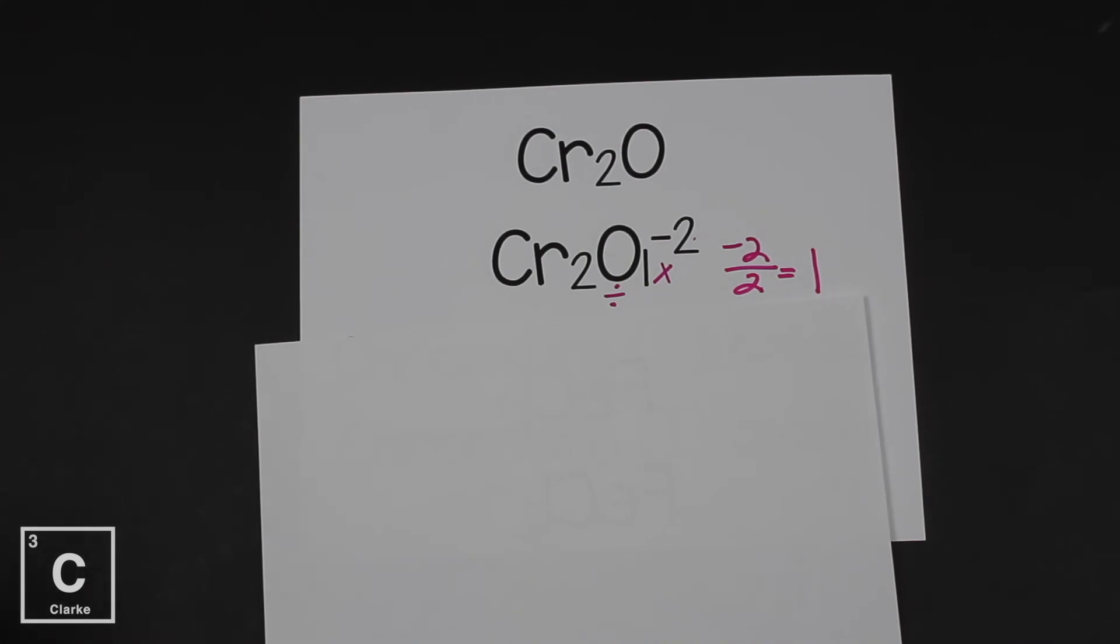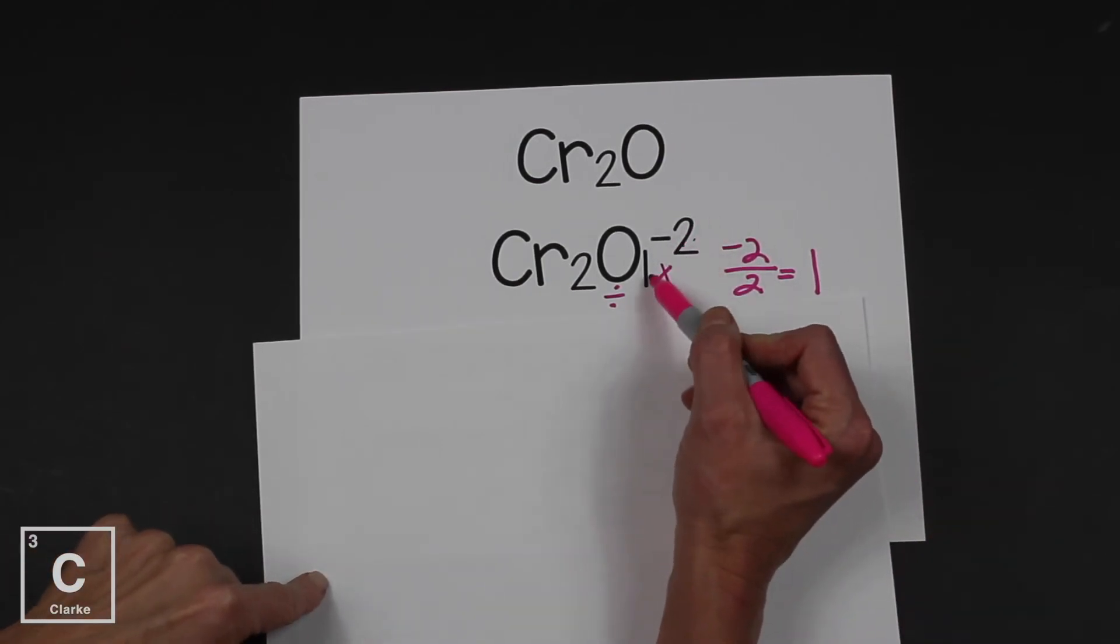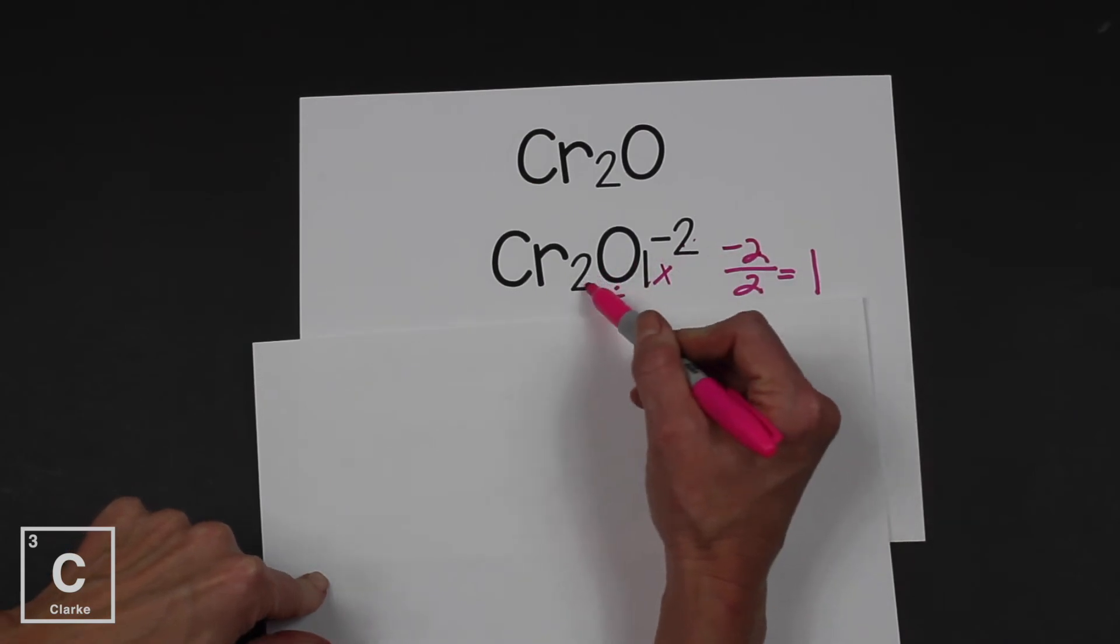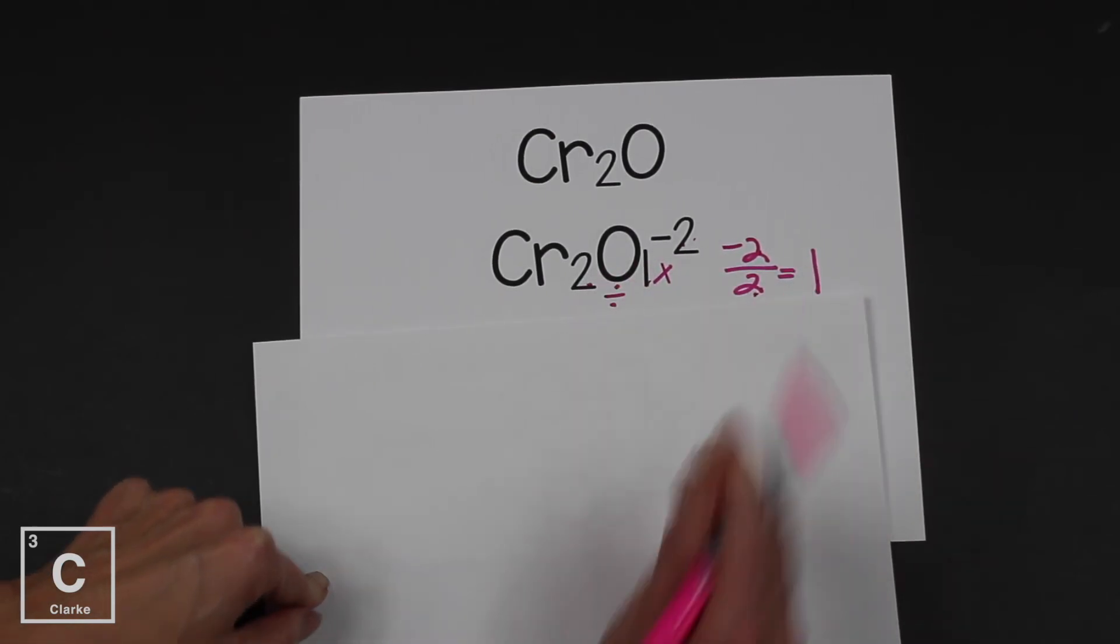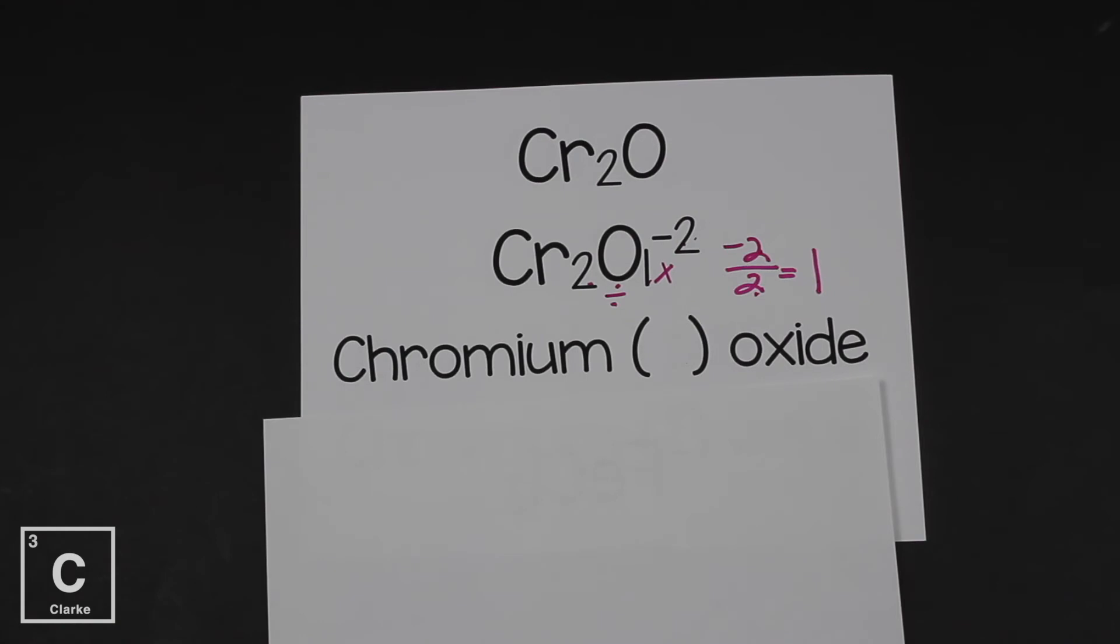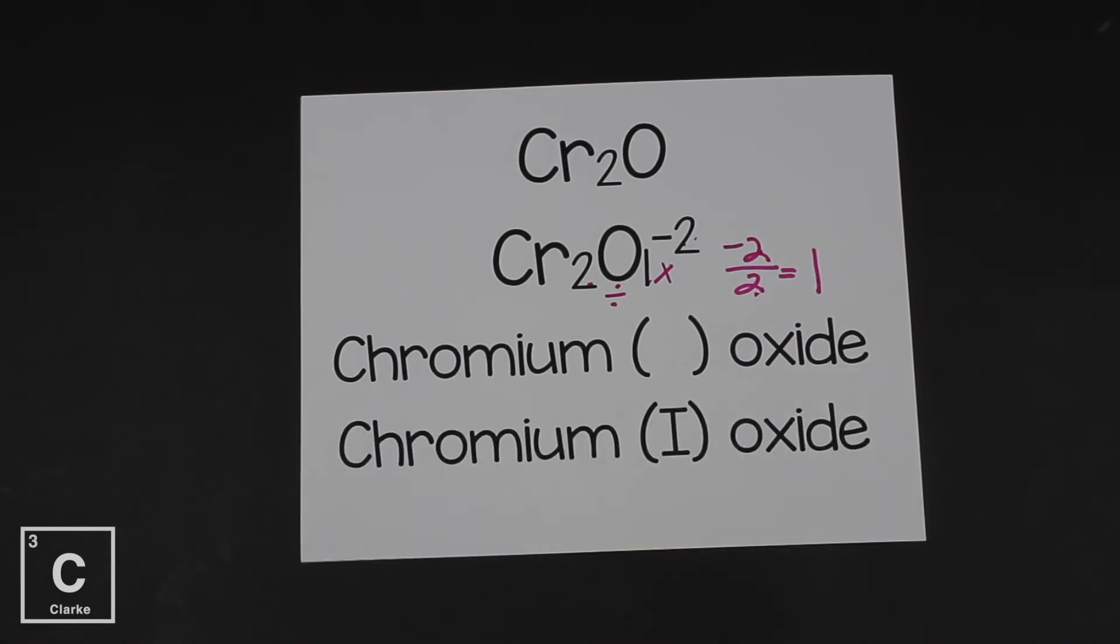Divide by two, that's a one. Now, you can ignore the charge because the metal is always a cation, positive. And the nonmetal is always an anion, negative. And since we're talking about figuring out the charge of chromium, it's always going to be a positive. And we decided that two times one is two divided by two is one. So when we're writing the name chromium oxide, and we need to figure out that Roman numeral, that Roman numeral is just going to be a one.